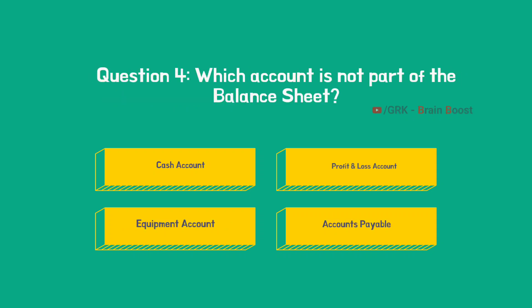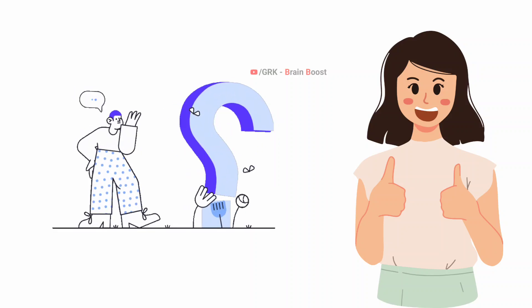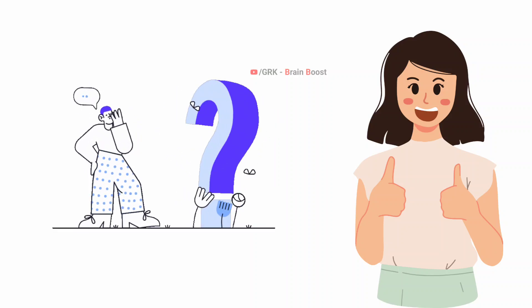Fourth question: which is not part of the balance sheet? The balance sheet shows the financial position of a company, which includes assets, liabilities, and capital. Looking at the options: cash account — yes, it is an asset; profit and loss account — no; equipment account — yes, it is an asset; accounts payable — yes, it is a liability. So the correct option is the profit and loss account. Hope you all are clear with these concepts — if you have any questions or any topic you want to discuss, please comment.